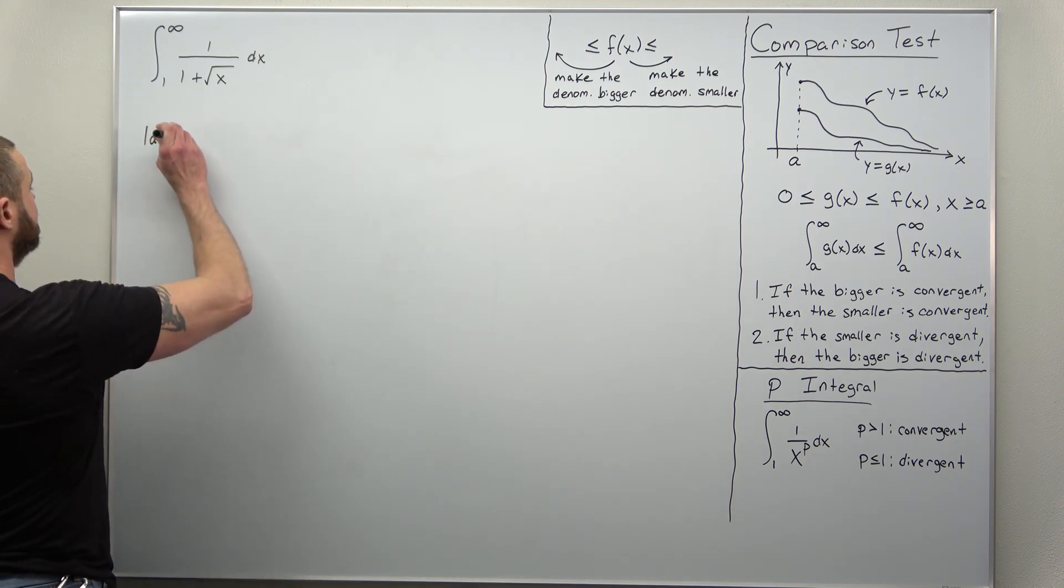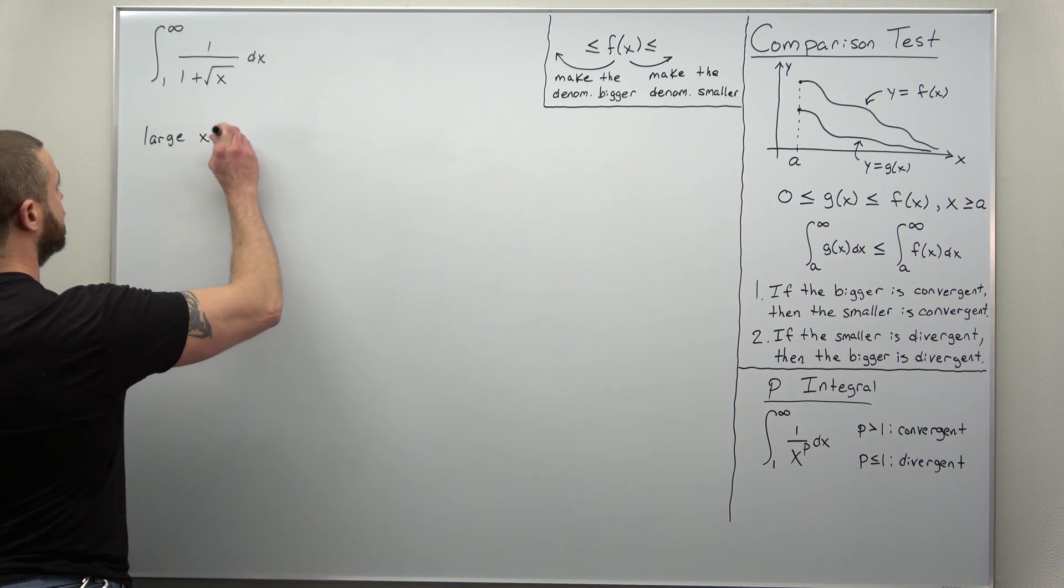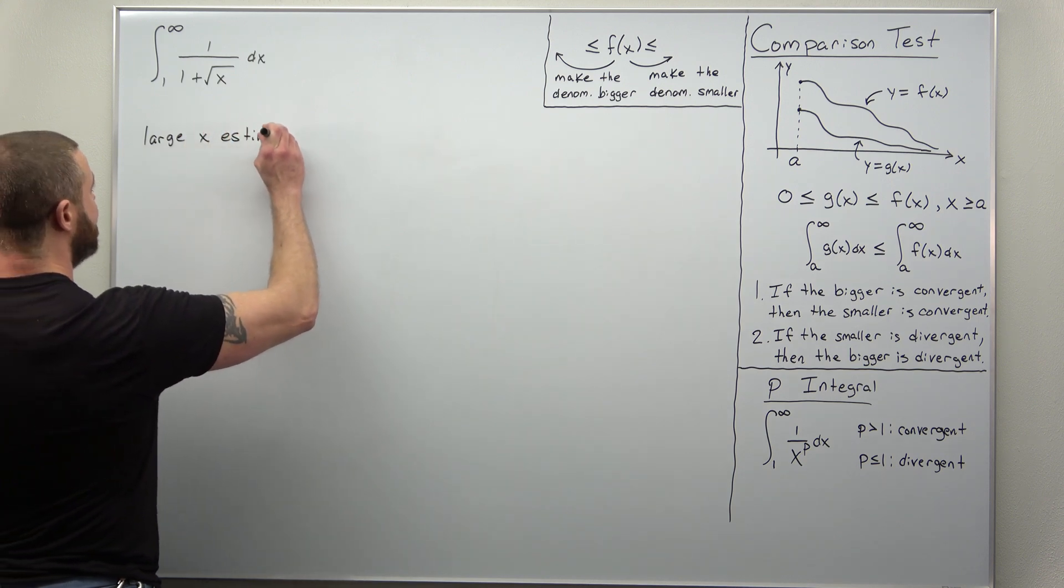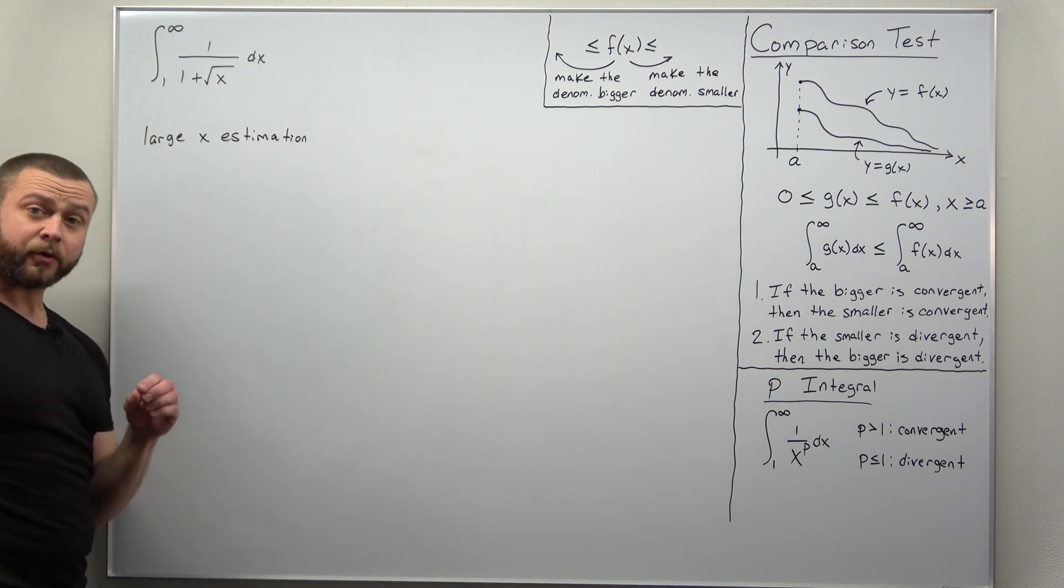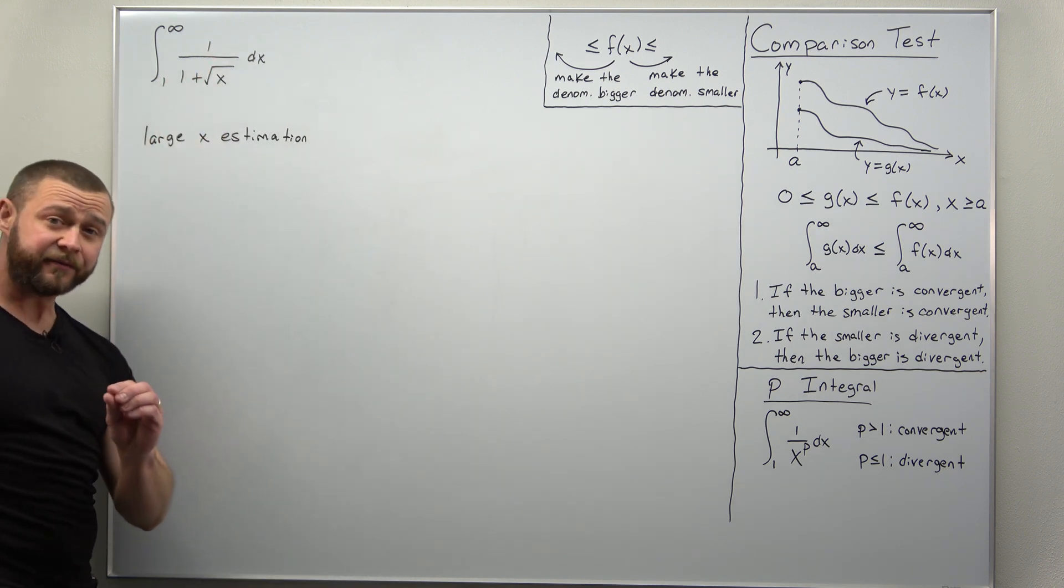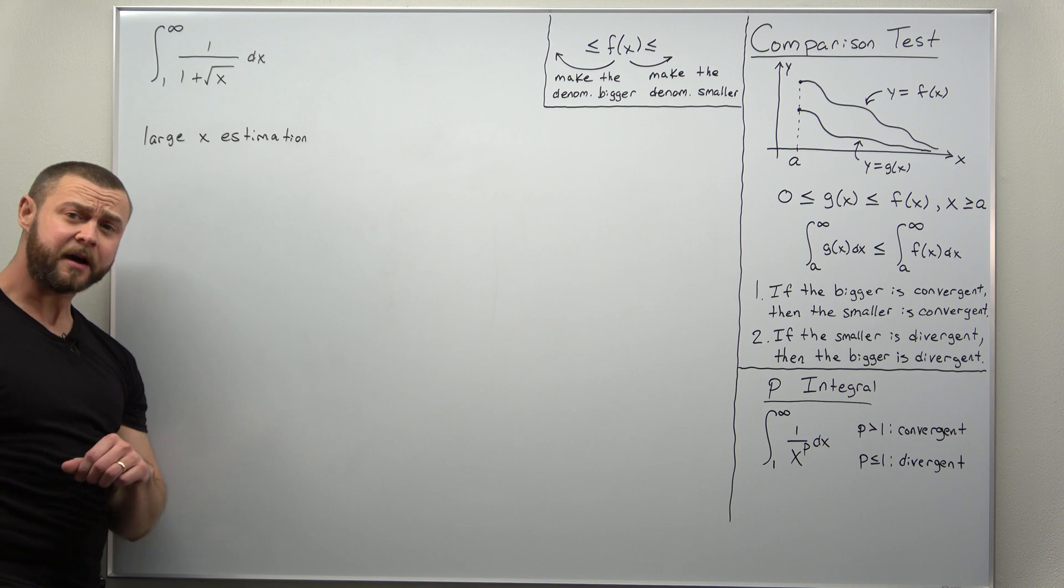So to determine and build our intuition for whether we think this converges or diverges, let's go through a large x estimation. In other words, what does this function behave like when x becomes really big?